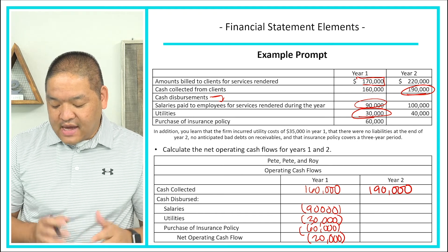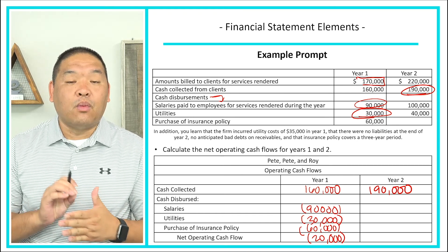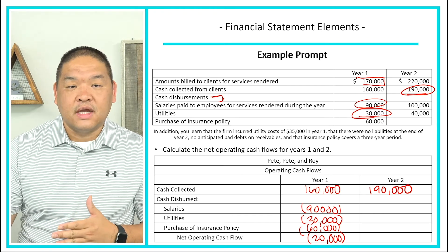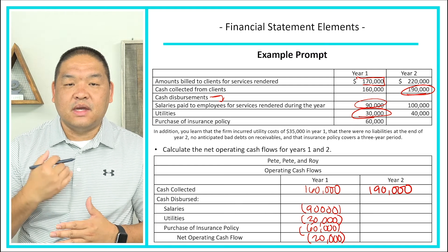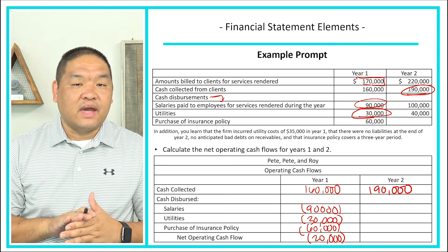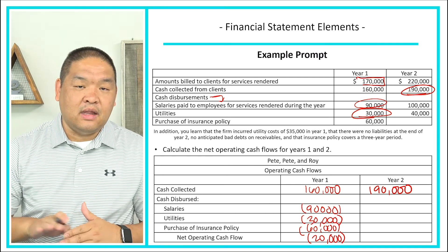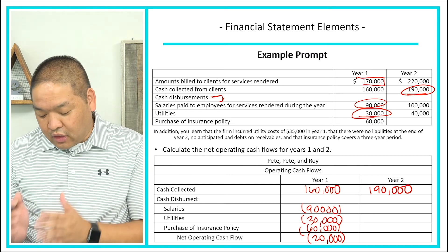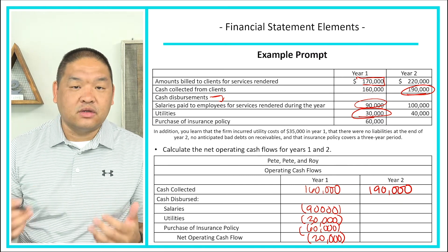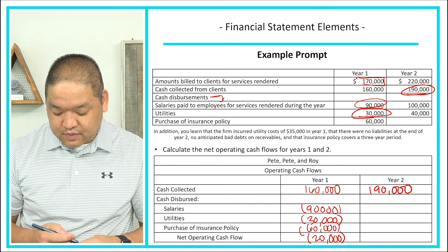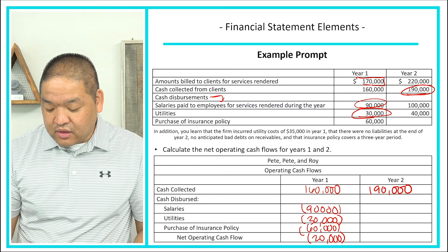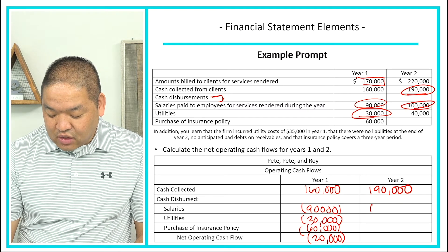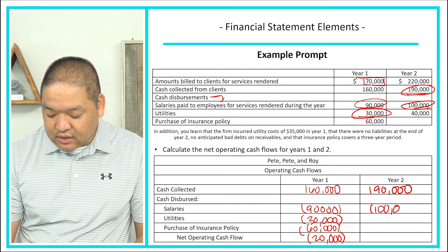We had $160,000 come in and $180,000 go out in year one. Now for year two: we already have our cash collected of $190,000. For cash disbursements, salaries were $100,000, so we subtract $100,000.